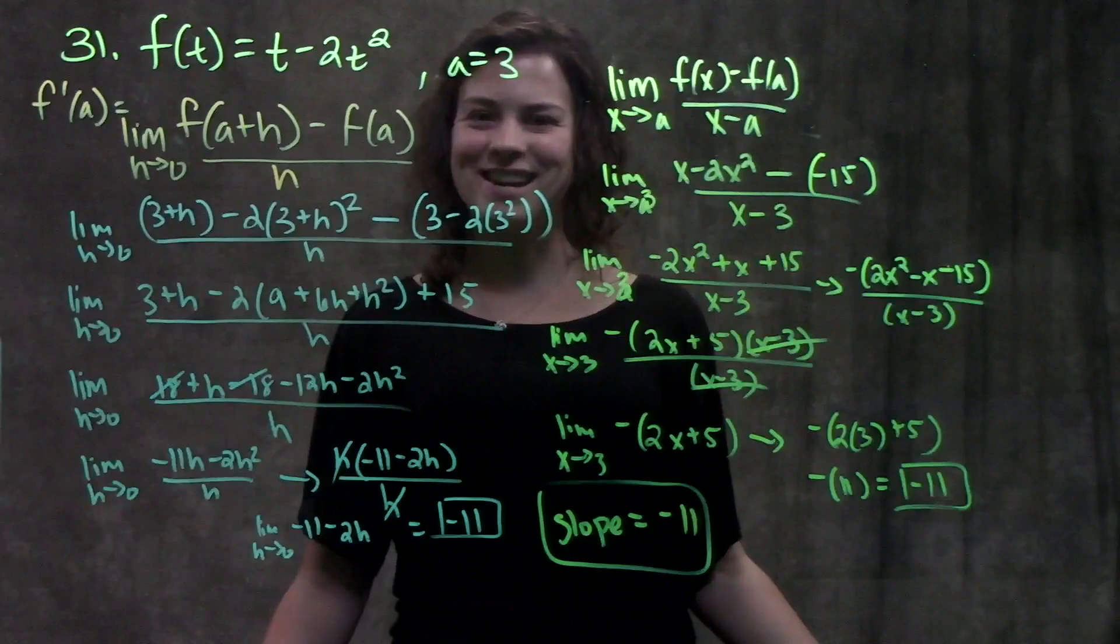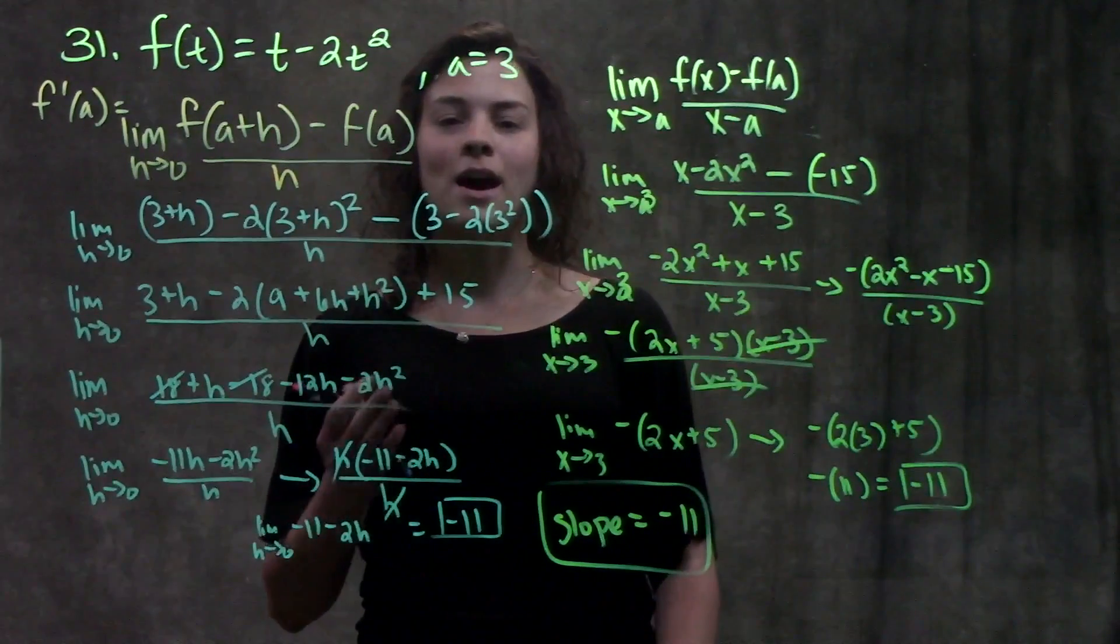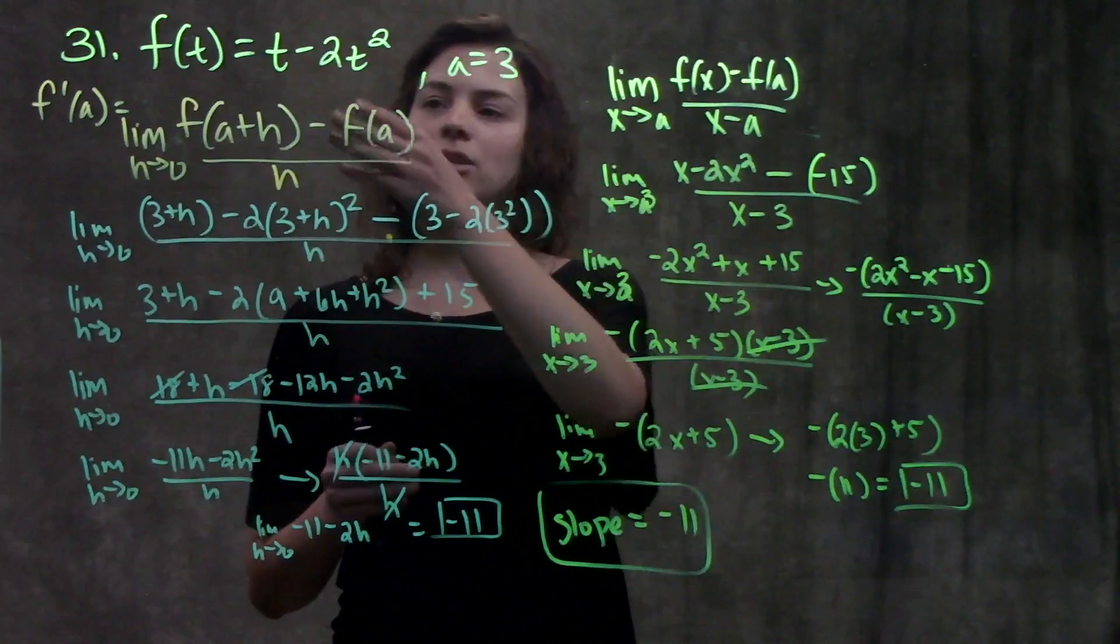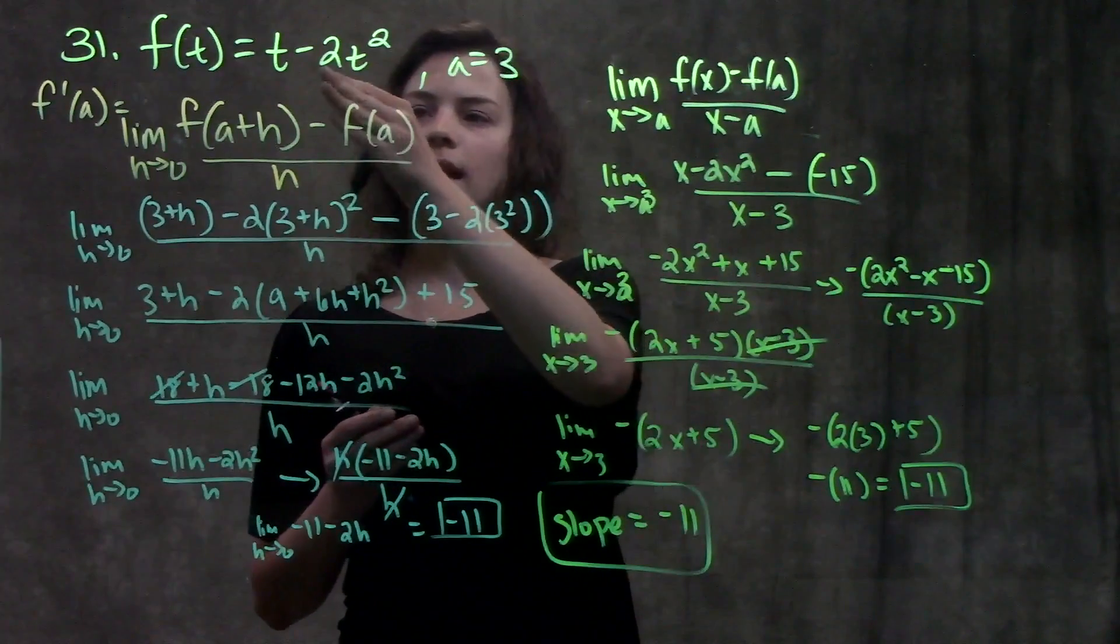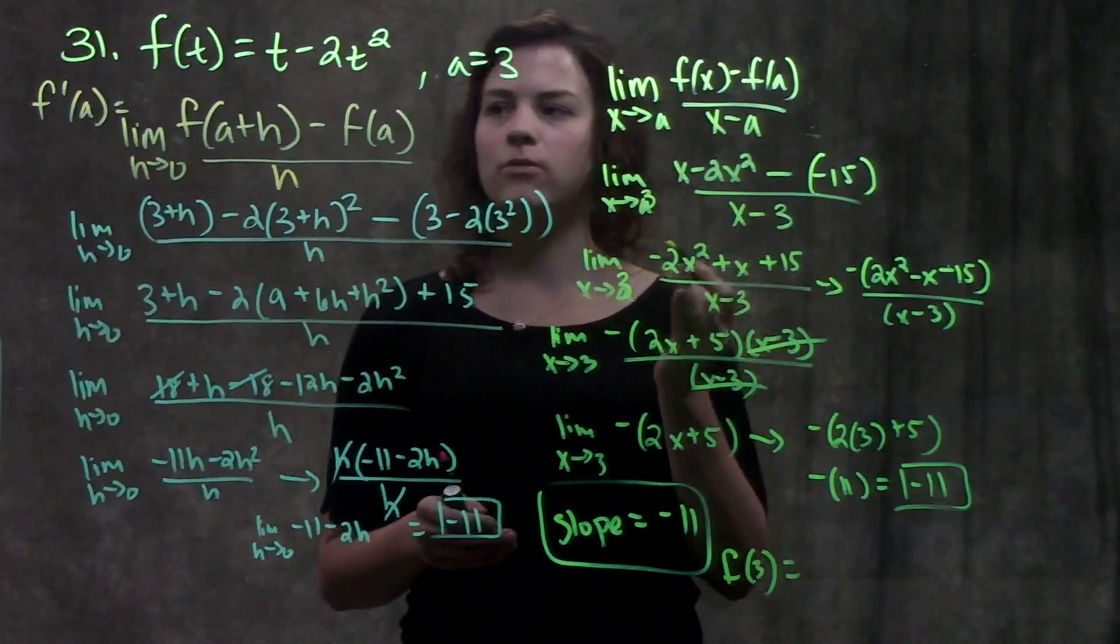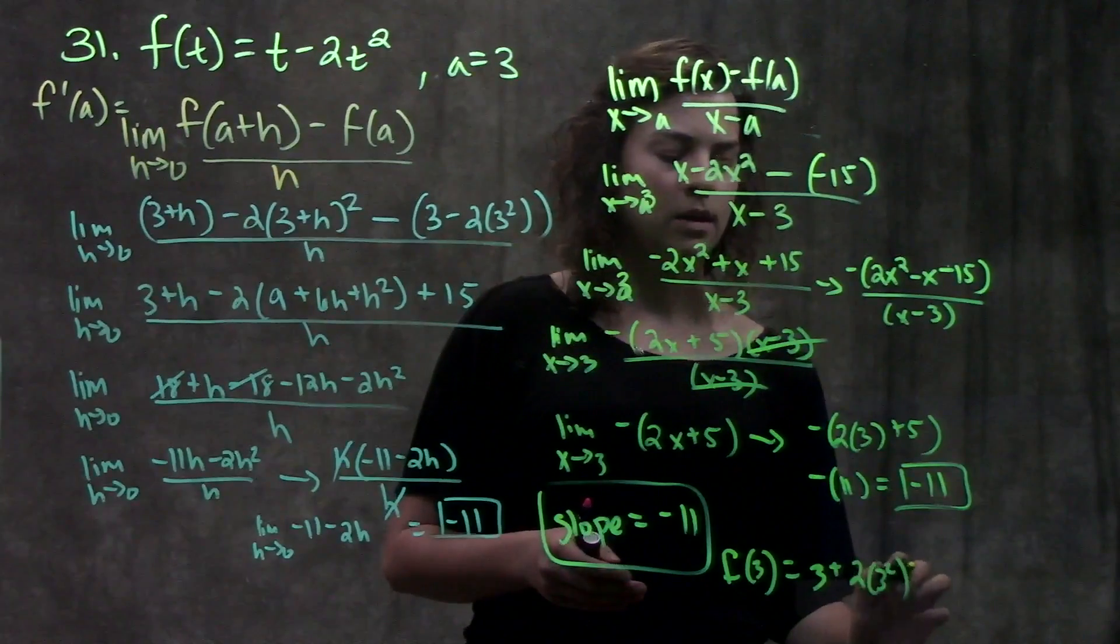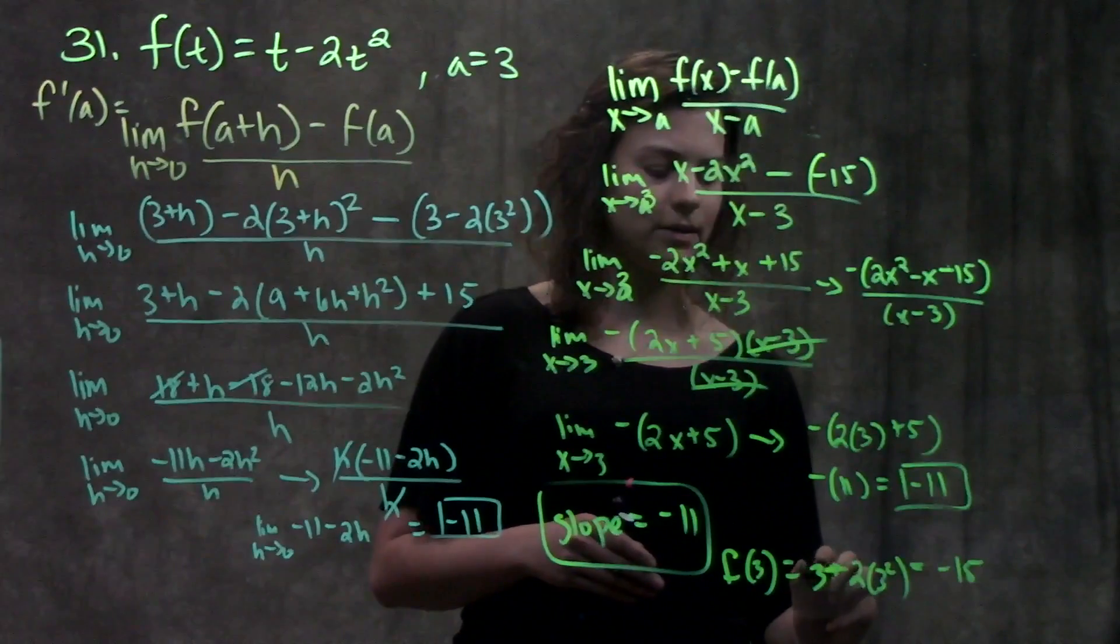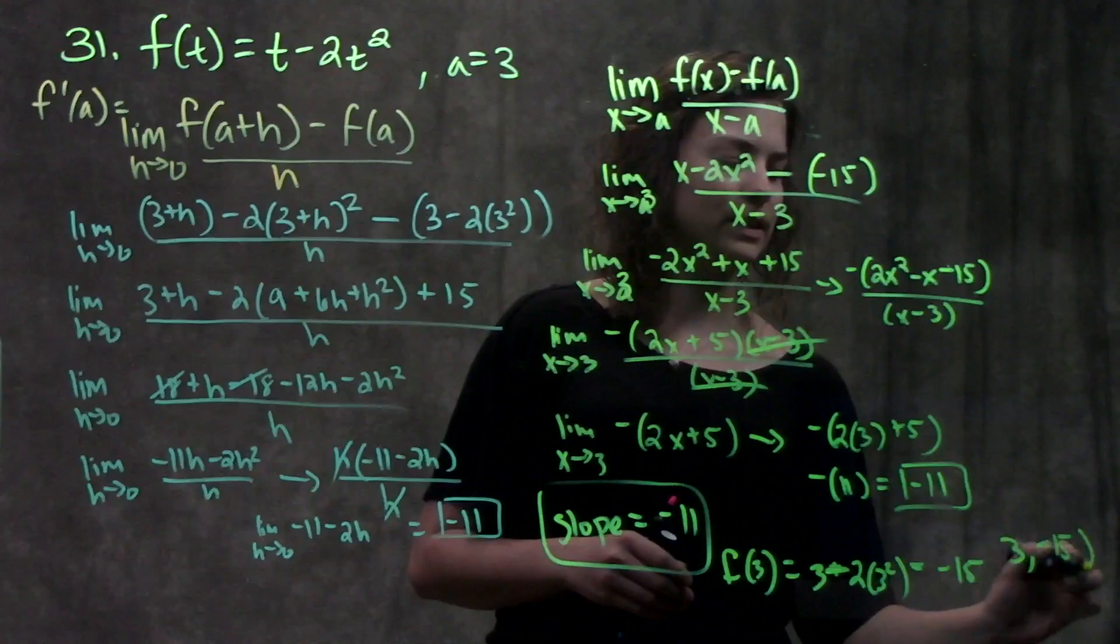Problem's only halfway done. So to find the equation of our tangent line, we said that we needed slope and we need a point on that line. We have our slope. To find our point, we're just going to plug 3 into our function because that's the only point we know. So when we plug 3 into our function, f of 3, we've already done this before, but we get 3 minus 2 times 3 squared, which becomes minus 15. So now we have the point (3, minus 15).